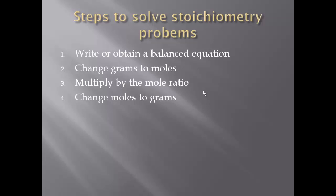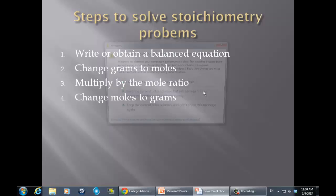So let's go through these steps. Obtain or write a balanced equation, number one. Number two, change grams to moles. Number three, multiply by the mole ratio. Number four, change moles to grams. Now, when can you skip step two? You can skip step two if you are given moles. When can you skip step four? When you have to find moles.